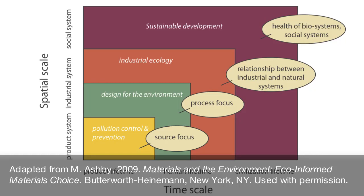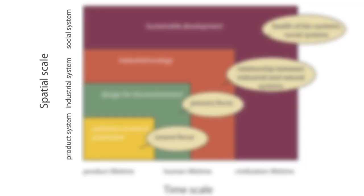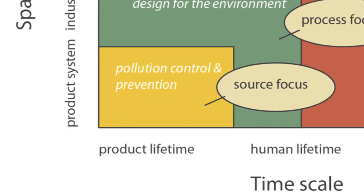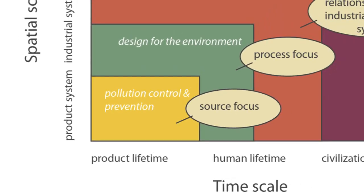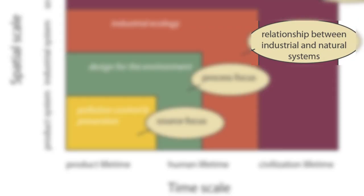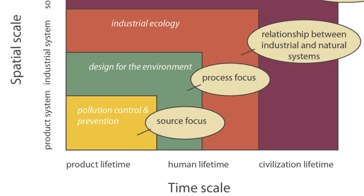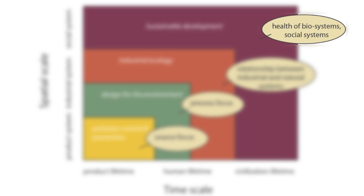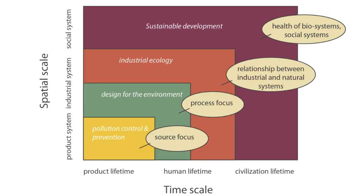Here's another look at the notion of moving the boundaries. In this image, the boundaries are created by space and time. The smallest boundary would be drawn around a product lifetime and aimed at what occurs as a source — this is the approach of pollution control and prevention. Expanding the boundaries to the next level would focus on process; this approach is design for the environment. The next level would examine the relationship between the industrial and natural system and look for opportunities for synergy — this approach is called industrial ecology. The next largest level considers the health of bio systems and social systems, which is the realm of sustainable development.